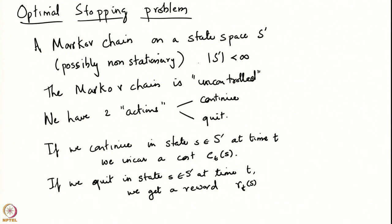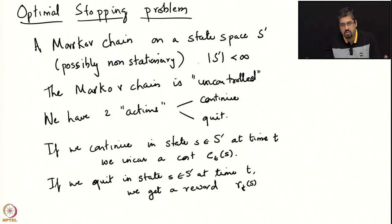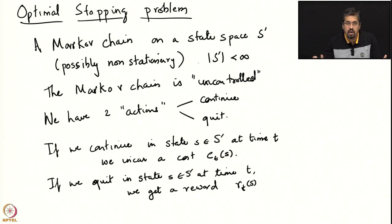This reward is accrued to us immediately, and after that the evolution of the chain stops — there is no further evolution and no further rewards or costs. So the question at every time is whether we should continue or quit. If we continue we incur a cost c_t of s; if we quit we get a reward r_t of s, and we are able to observe what state s is — that is, what the state of the Markov chain itself is.